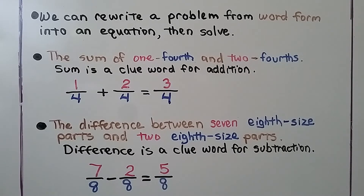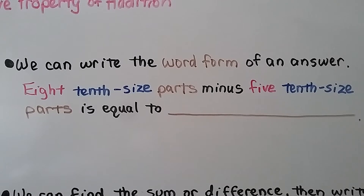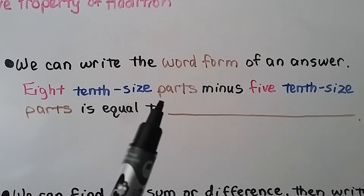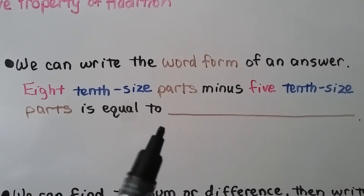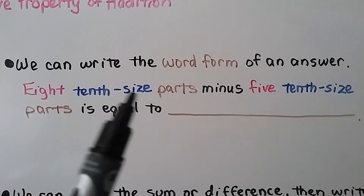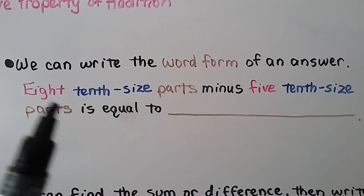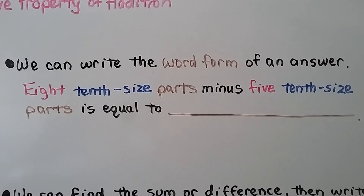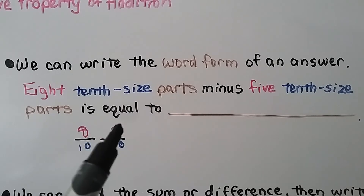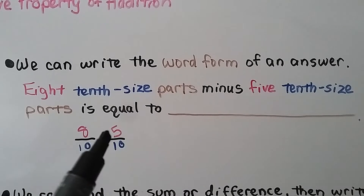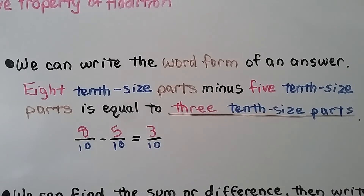We can also write the word form of an answer. Eight tenths-size parts minus five tenths-size parts: they're both tenths-size parts, so we keep the same denominator and do eight minus five which is three — it's equal to three tenths-size parts. Eight-tenths minus five-tenths equals three-tenths.